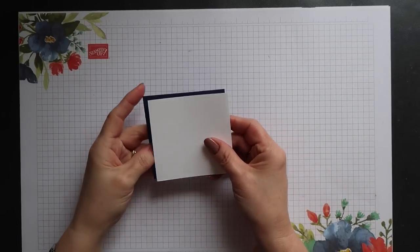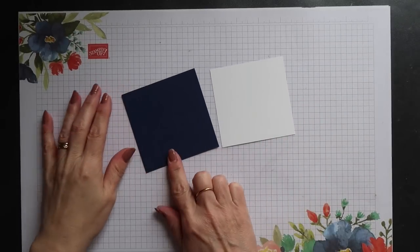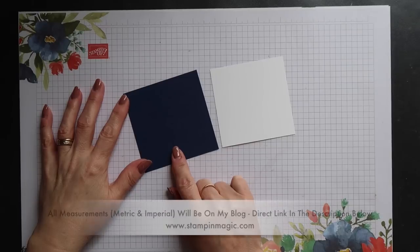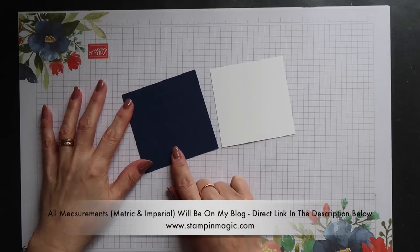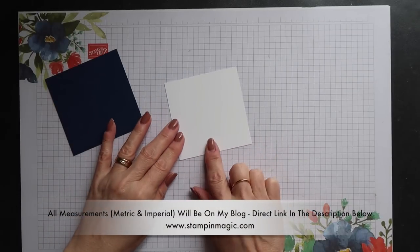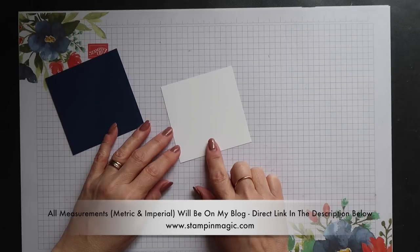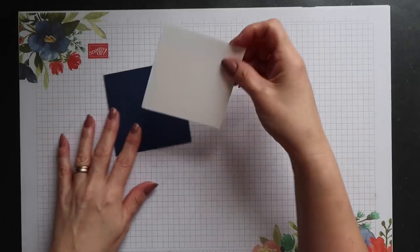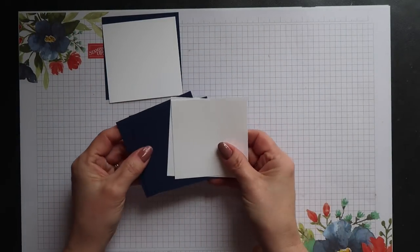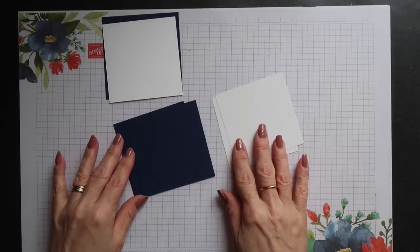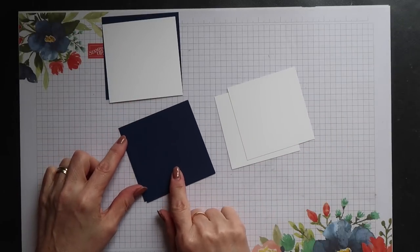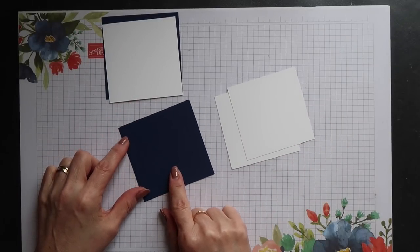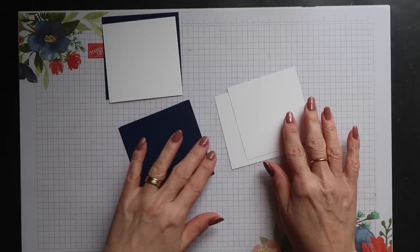The two lighthouses and one of the smaller boats will be glued flat to your card, but all the other images will need dimensionals placed on the reverse. For the top of the box, you need some Night of Navy card measuring three and a half inch squared, which is nine centimeters. For the cards, your Night of Navy card should measure three and three-eighths of an inch squared, which is eight point six centimeters.